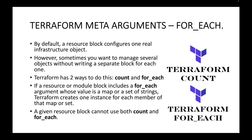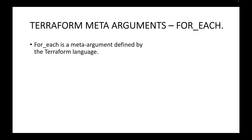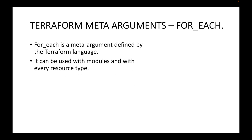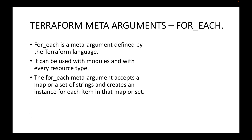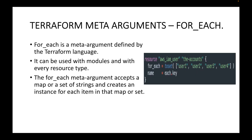A resource block cannot use both count and for_each — you can use only one of them within the same resource block. For_each is a meta argument defined by the Terraform language and can be used with module blocks as well as any resource block. It accepts a map or a set of strings and creates an instance for each item. For example, here we are creating AWS IAM users using for_each with user one, user two, user three, and user four.